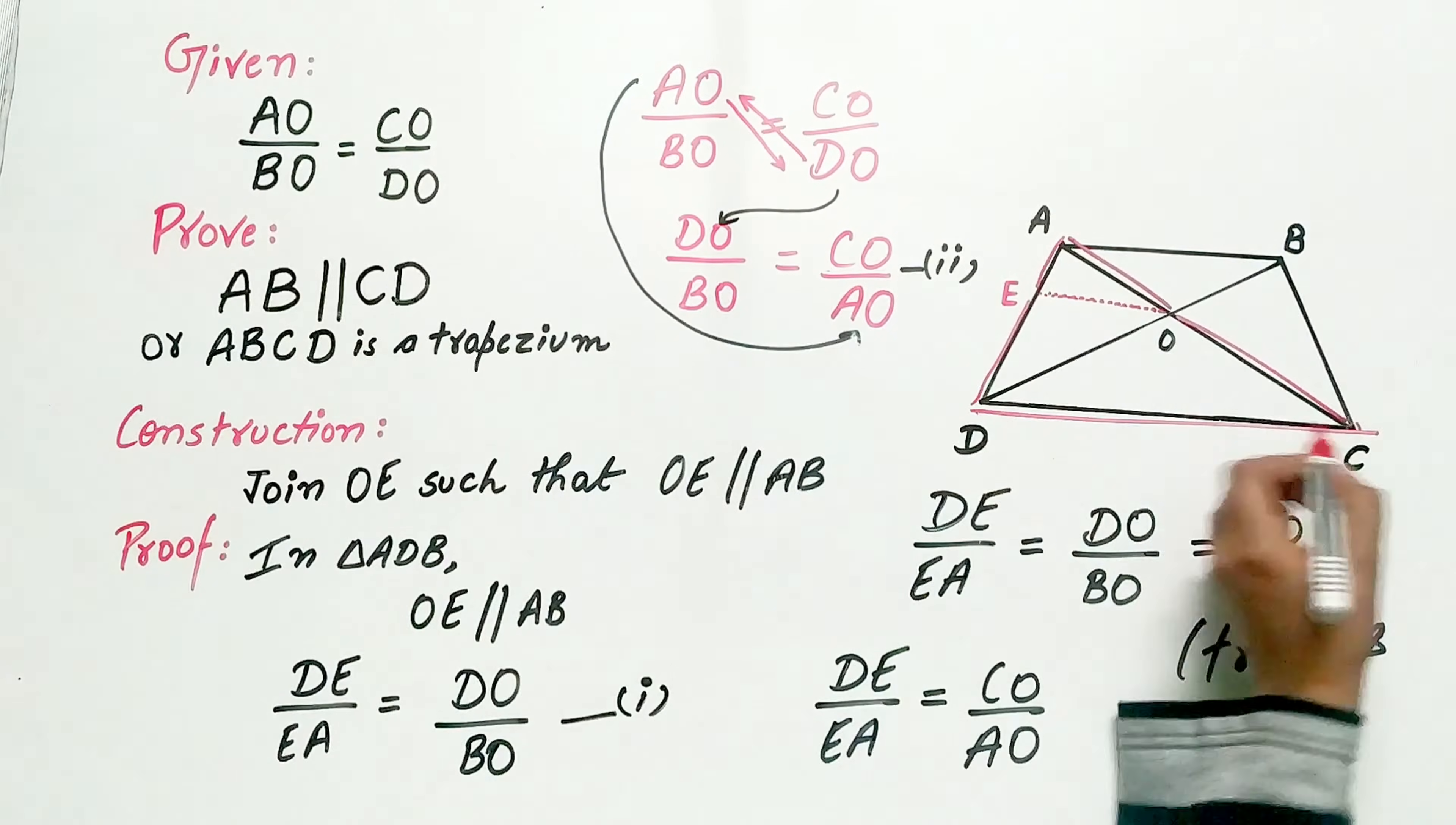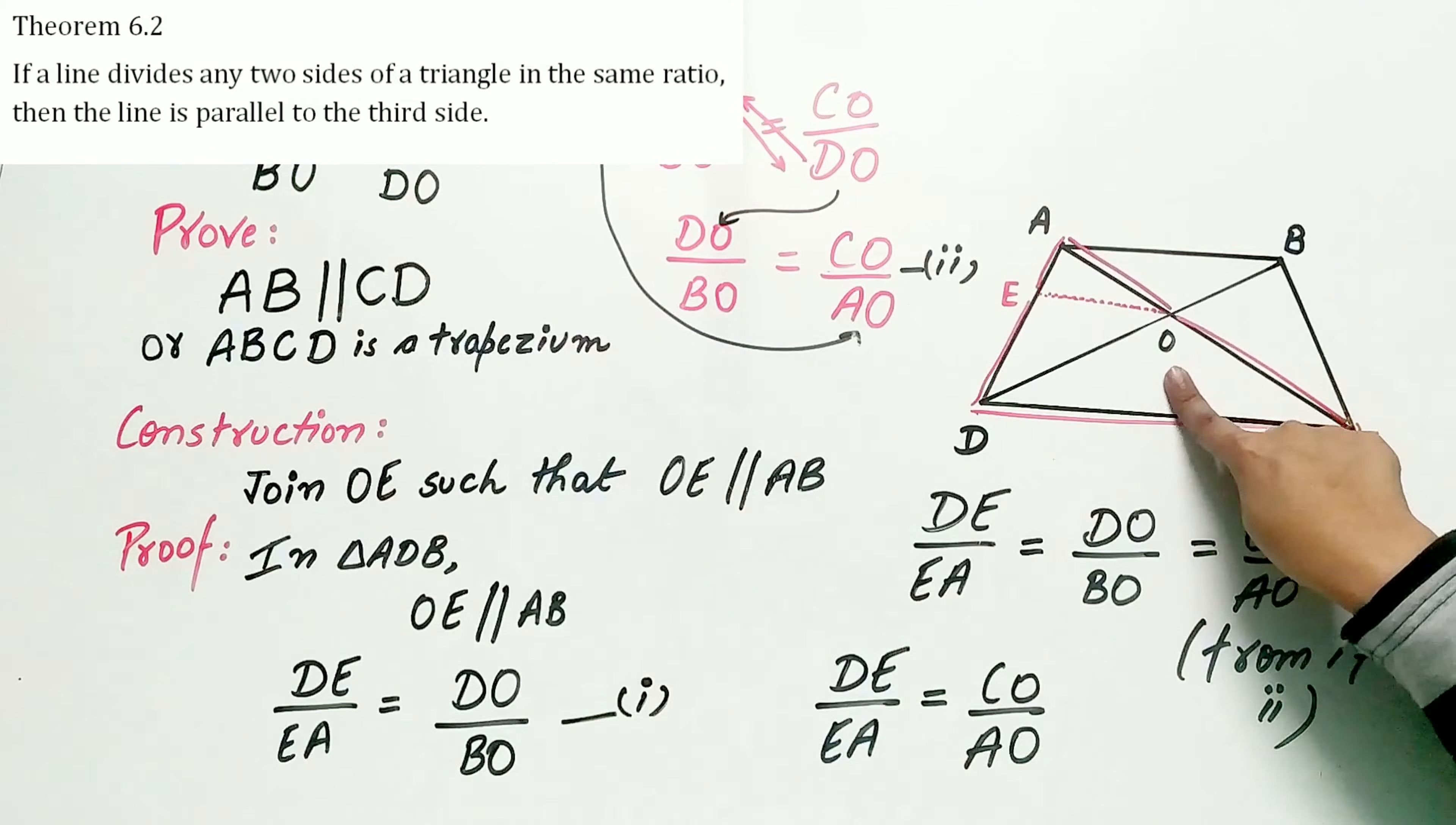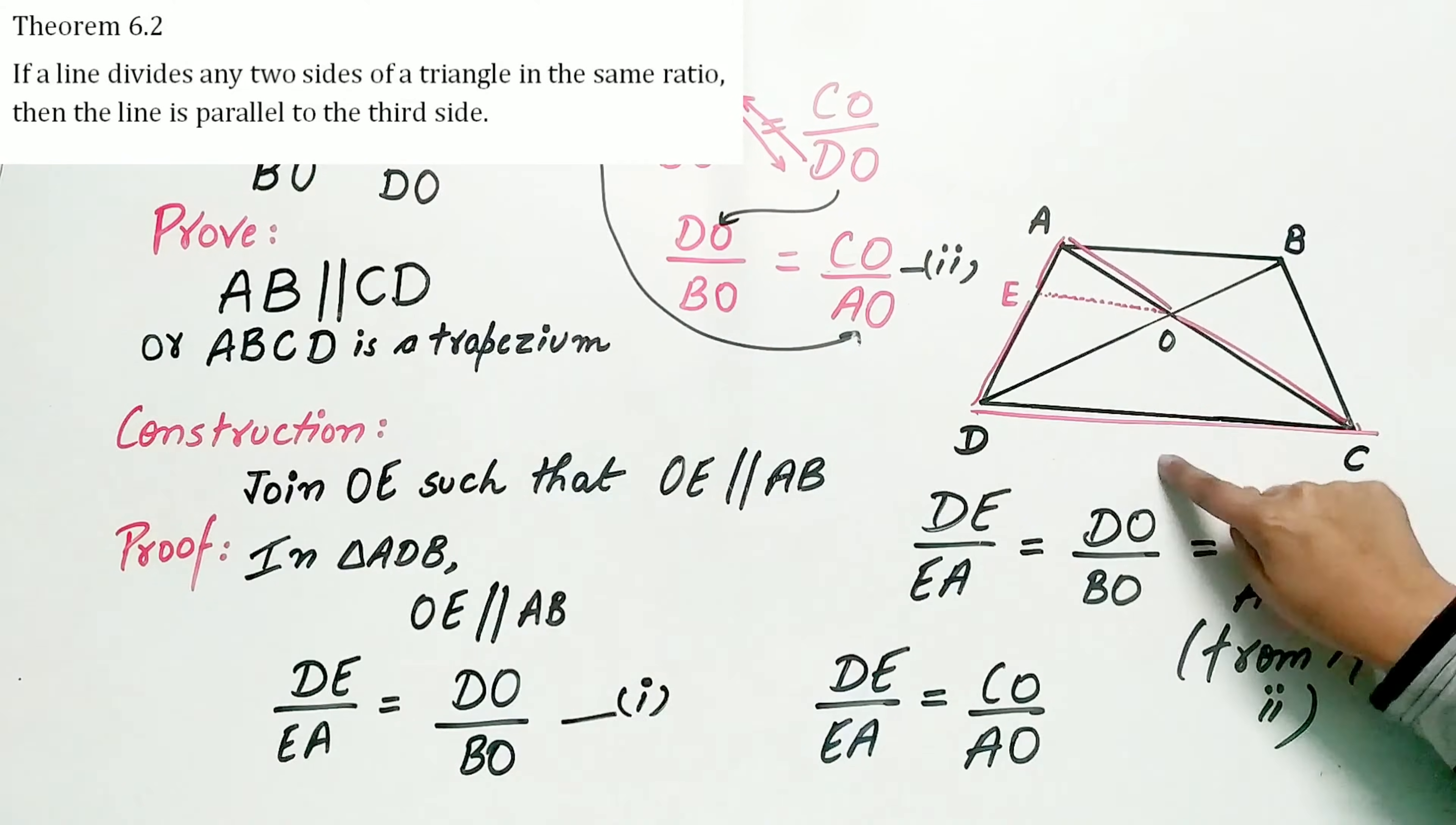Now they are part of triangle ADC. Remember theorem 6.2 that says, if a line divides any two sides of a triangle in the same ratio, then the line is parallel to the third side.